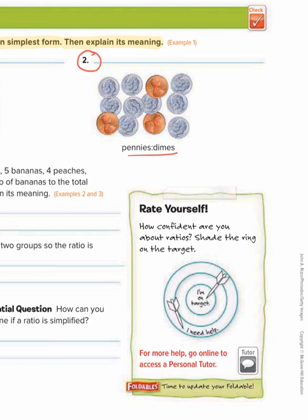So there's three pennies. [Counting: one, two, three, four, five, six, seven, eight, nine] Nine dimes. So pennies to dimes is three to nine.